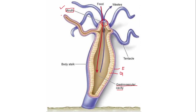The digestive cavity of hydra is also called the gastrovascular cavity and is also called the coelenteron. In addition to the epidermis, gastrodermis, gastrovascular cavity, and mouth, there are thread-like structures called tentacles. What is the function of these tentacles?